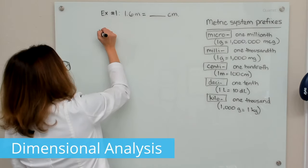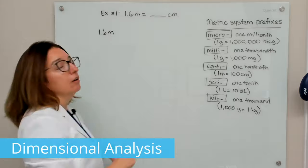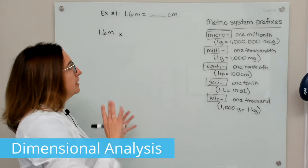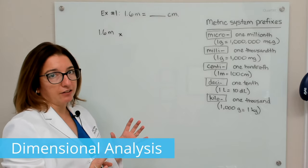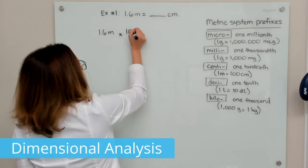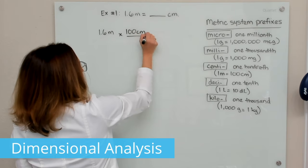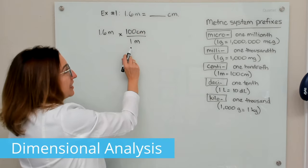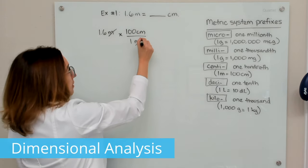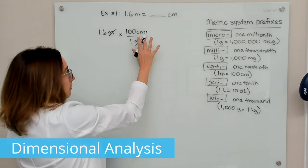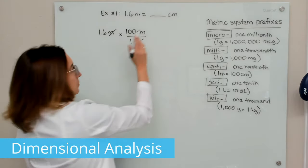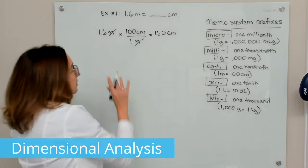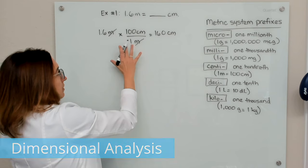We're going to write down our current units, which are 1.6 meters, and multiply times the appropriate conversion factor. We know that there are 100 centimeters in one meter, and I need to set up my ratio so that the meters will cross off. If I multiply this out, I'll be left with centimeters, and we end up with 160 centimeters. That's how you would solve this with dimensional analysis.